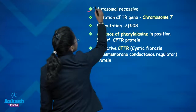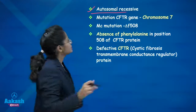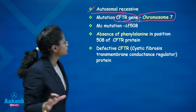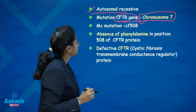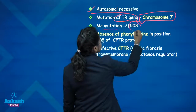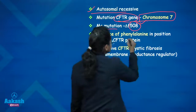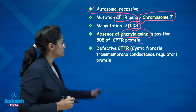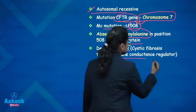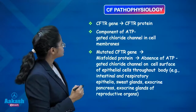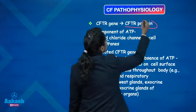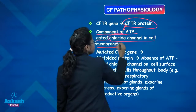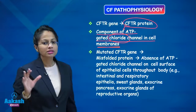Cystic fibrosis is an autosomal recessive condition and the CFTR gene is present on chromosome number 7 — very important, this can also be asked in MCQs. The most common mutation is at position 508, where phenylalanine is absent in the CFTR protein, leading to a defective CFTR — cystic fibrosis transmembrane conductance regulator protein. This CFTR protein is a component of the ATP-gated chloride channels in the cell membrane.